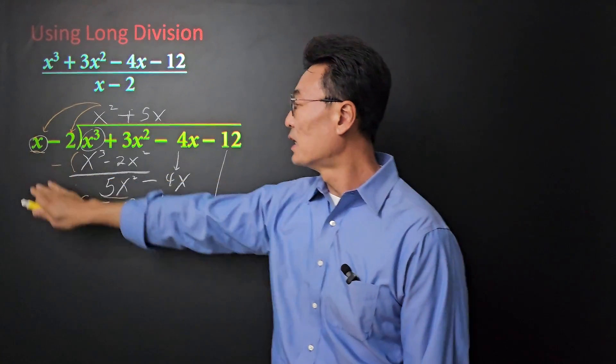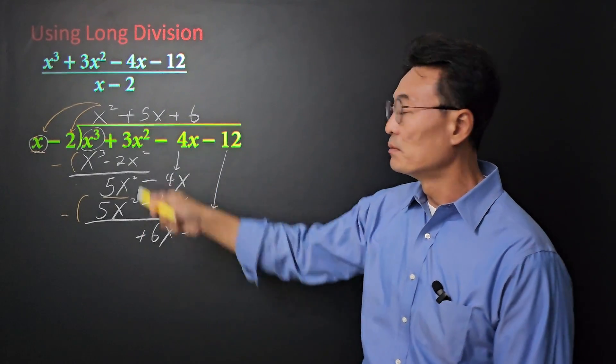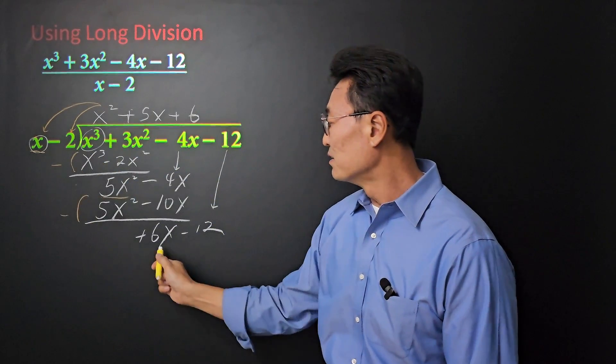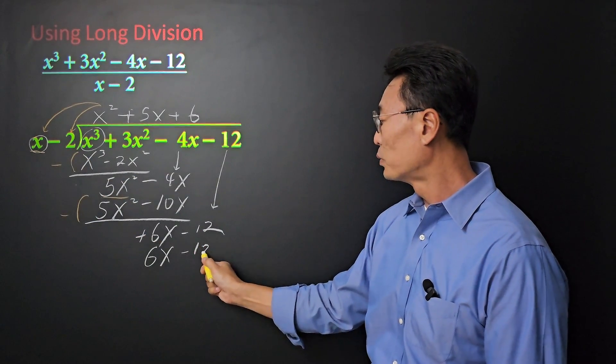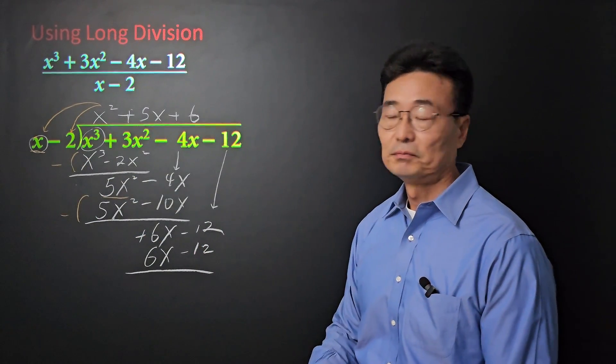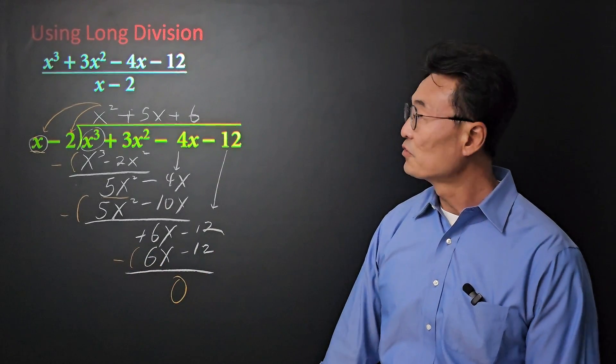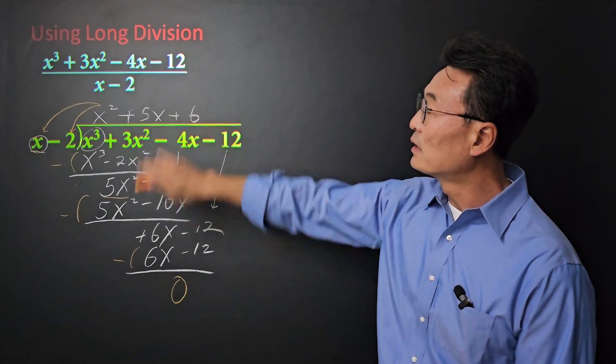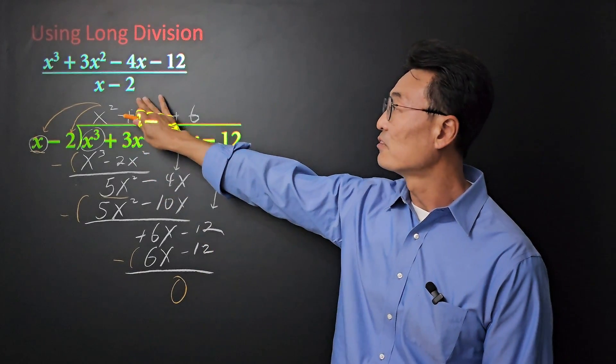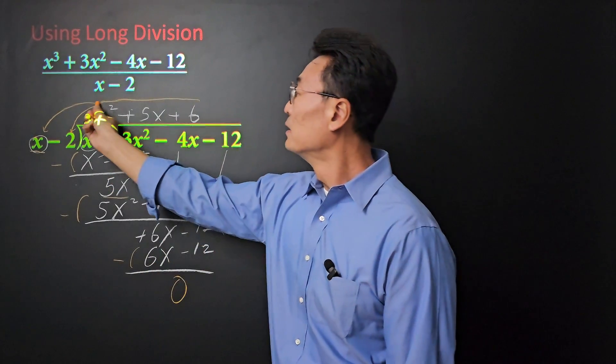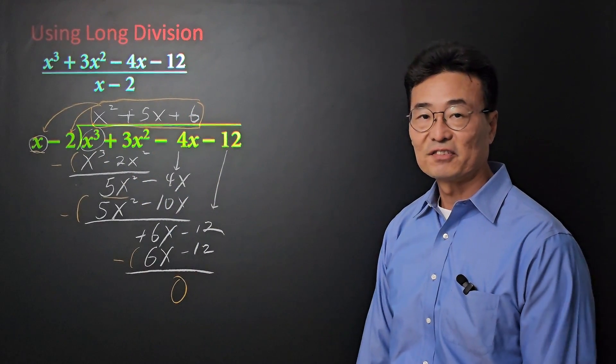x times what gives us 6x? It's going to be positive 6. 6 times x is 6x. 6 times negative 2 is negative 12. If we subtract, we get a 0. So, when we divide x cubed plus 3x squared minus 4x minus 12 by x minus 2, we get x squared plus 5x plus 6.